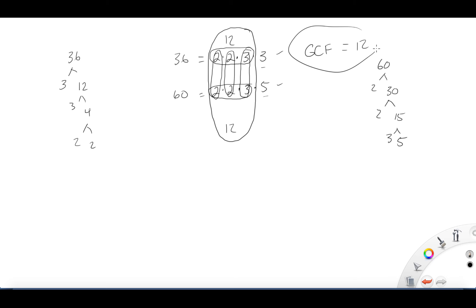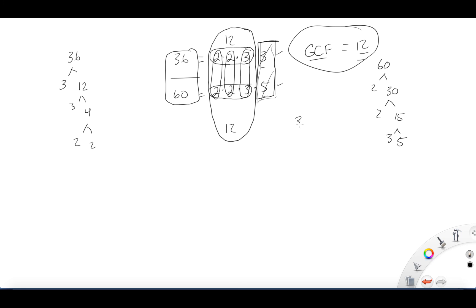So the GCF of 36 and 60 equals 12. The leftover numbers — three and five — don't factor into the GCF, but they're useful for something else: they give you the reduced fraction, which is three over five. So prime factorization also helps with fraction reduction. That's your lesson today — hopefully you do well, and if you have questions you can ask.